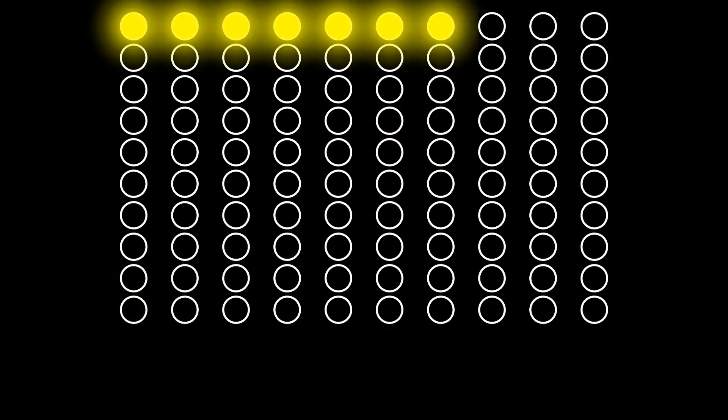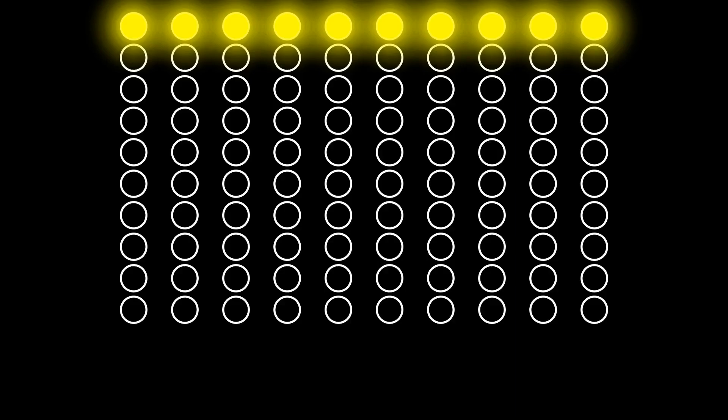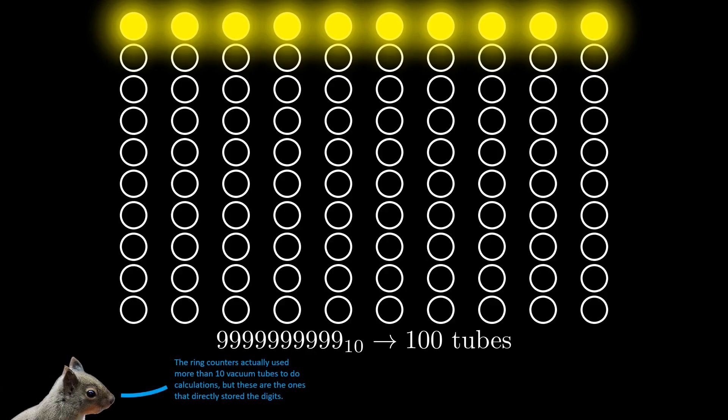ENIAC used 10 digit decimal numbers, so it could write numbers up to 10 billion minus 1. And it had a radix economy of 100 for 100 vacuum tubes.